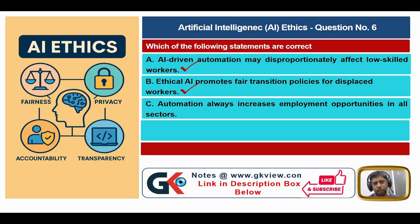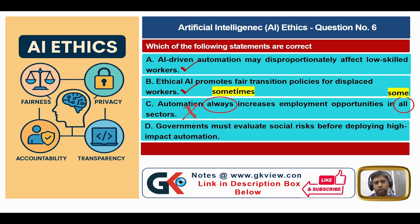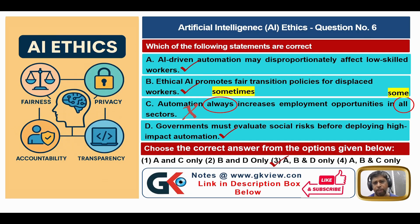Statement C: automation always increases employment opportunities in all sectors — 'always' and 'all' are wrong; it should be 'sometimes' and 'some sectors,' so statement C is false. Statement D: governments must evaluate social risk before deploying high-impact automation — this is true. So A, B, and D are true, making the answer option three.